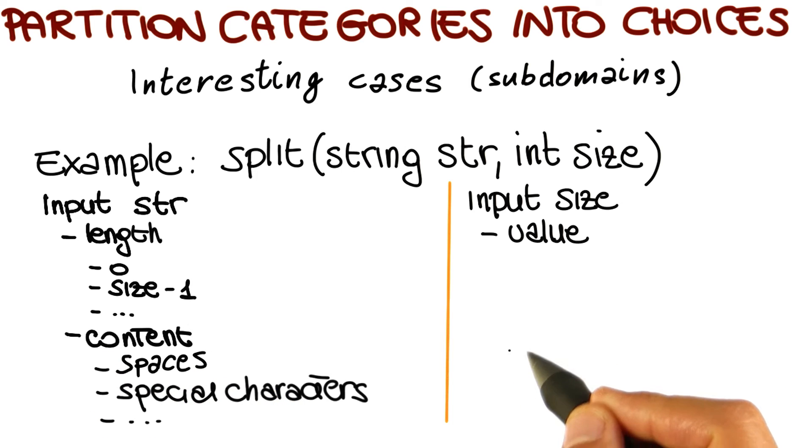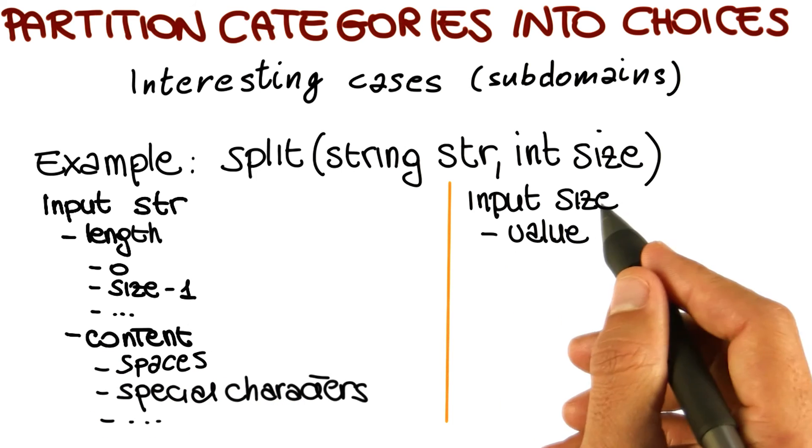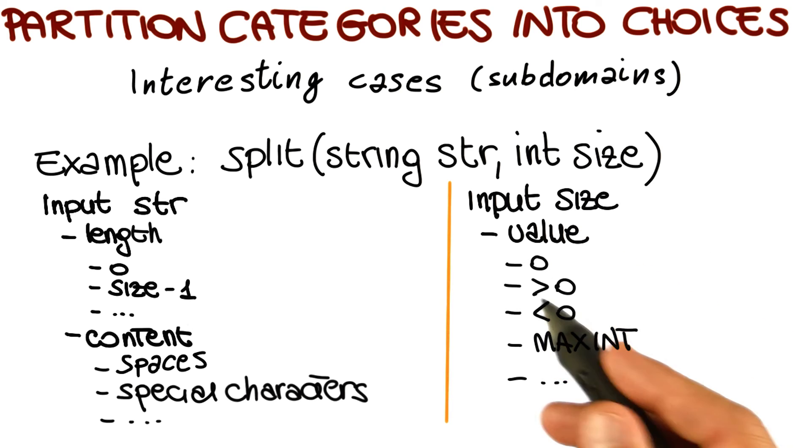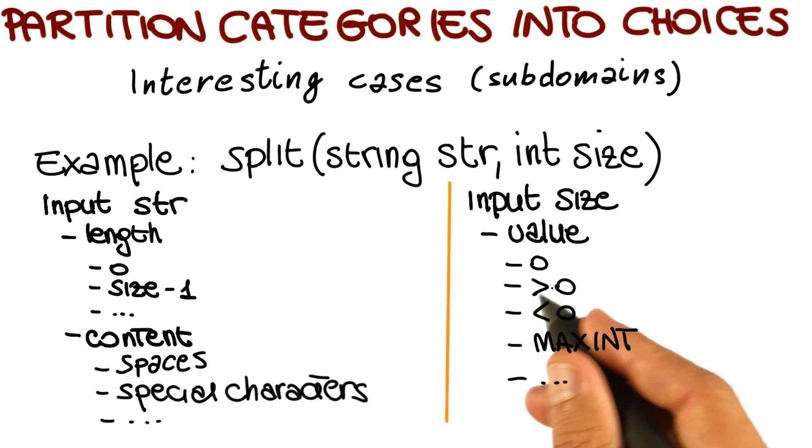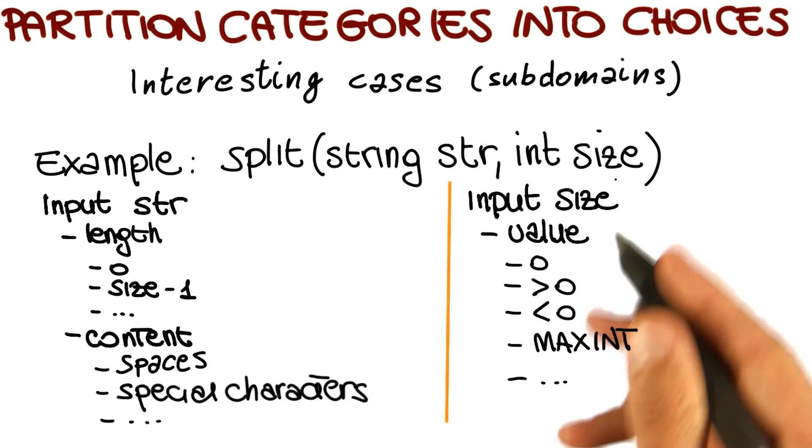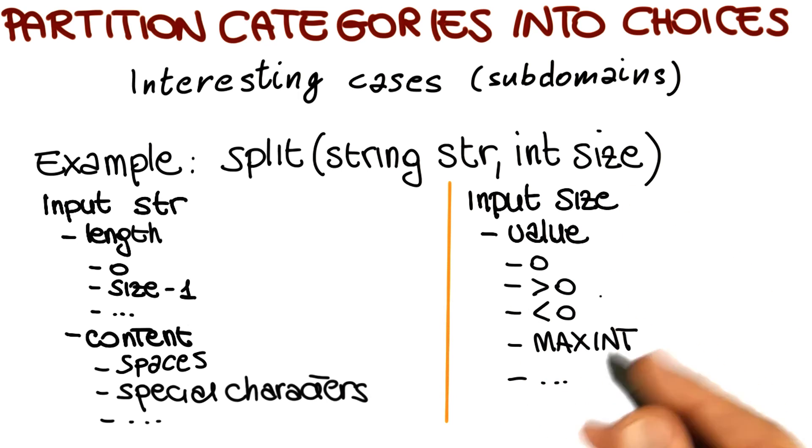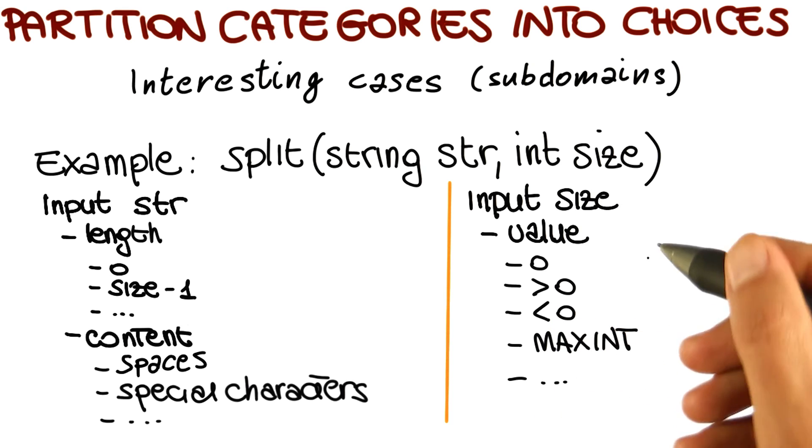Now let's move to the value as the next category, the value of the input size. Here we might want to consider size zero as a special case, a normal situation like size greater than zero, another special case like size less than zero, or max int. These are, if you remember, exactly the cases that we considered when we looked at this example before.